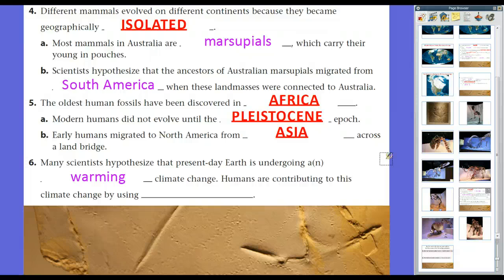But this is where you have most scientists agree that there is some warming. However, scientists are divided over what's causing it, which we'll talk about later this year. But your textbook talks about how humans are contributing to climate change using fossil fuels.